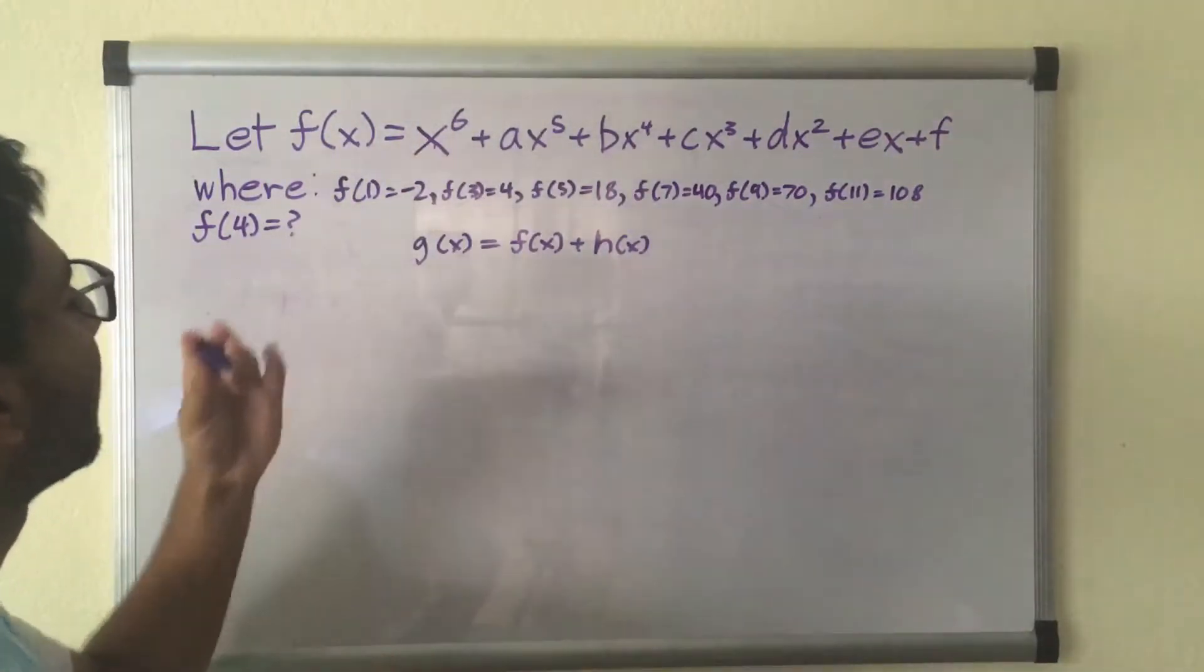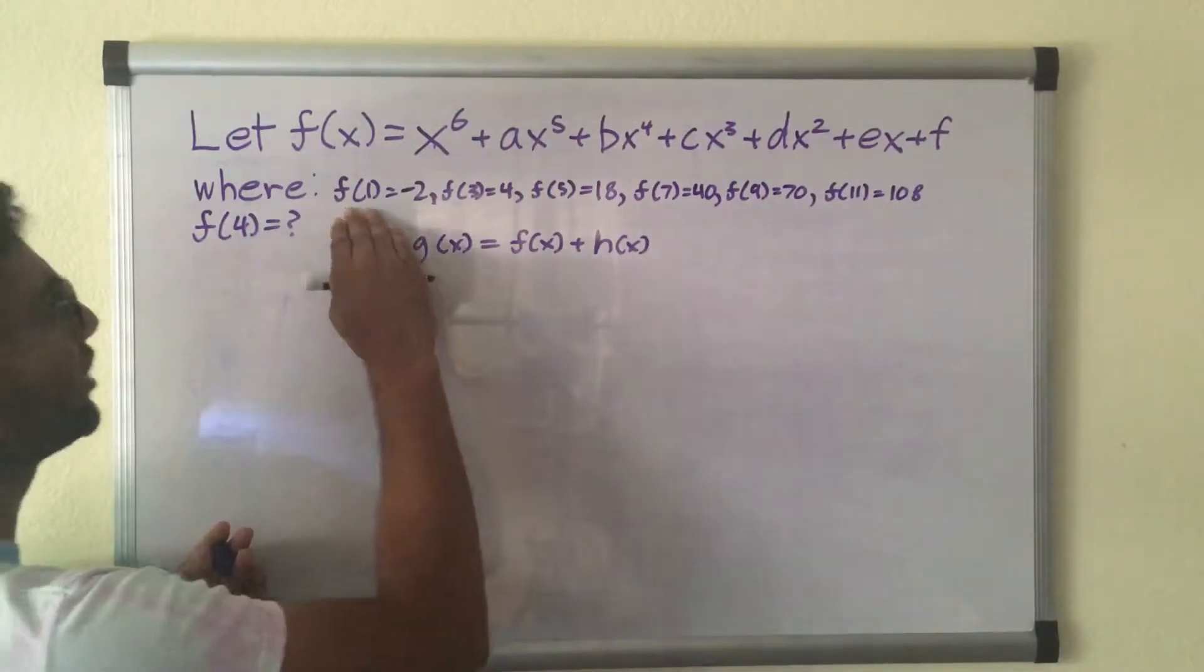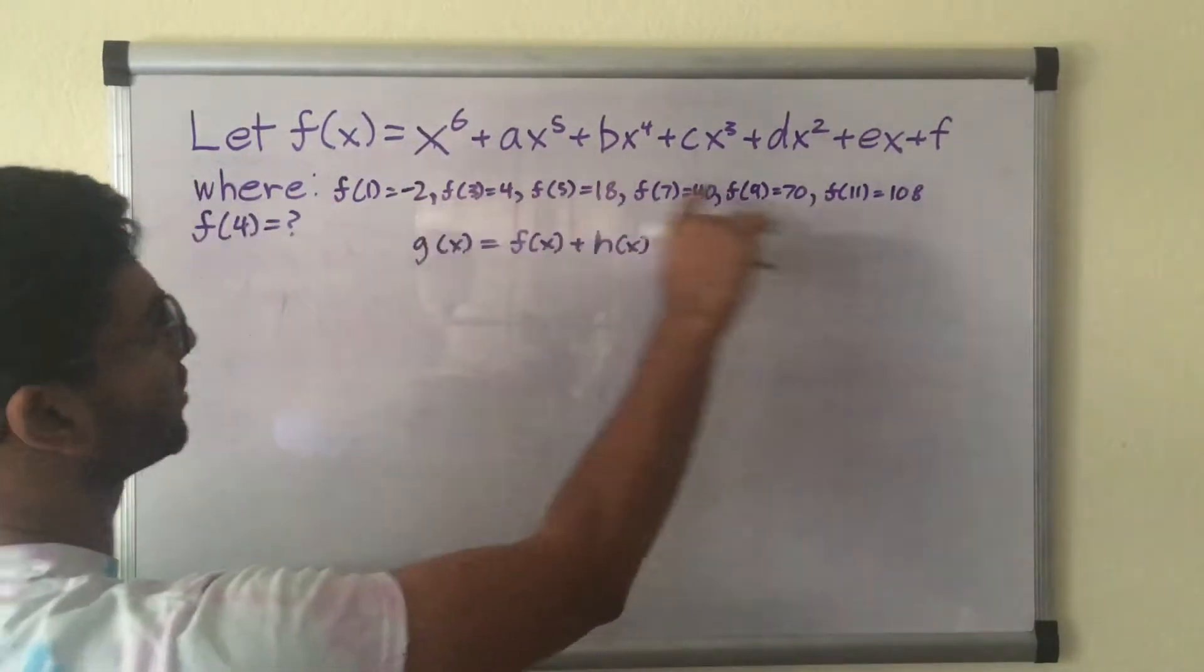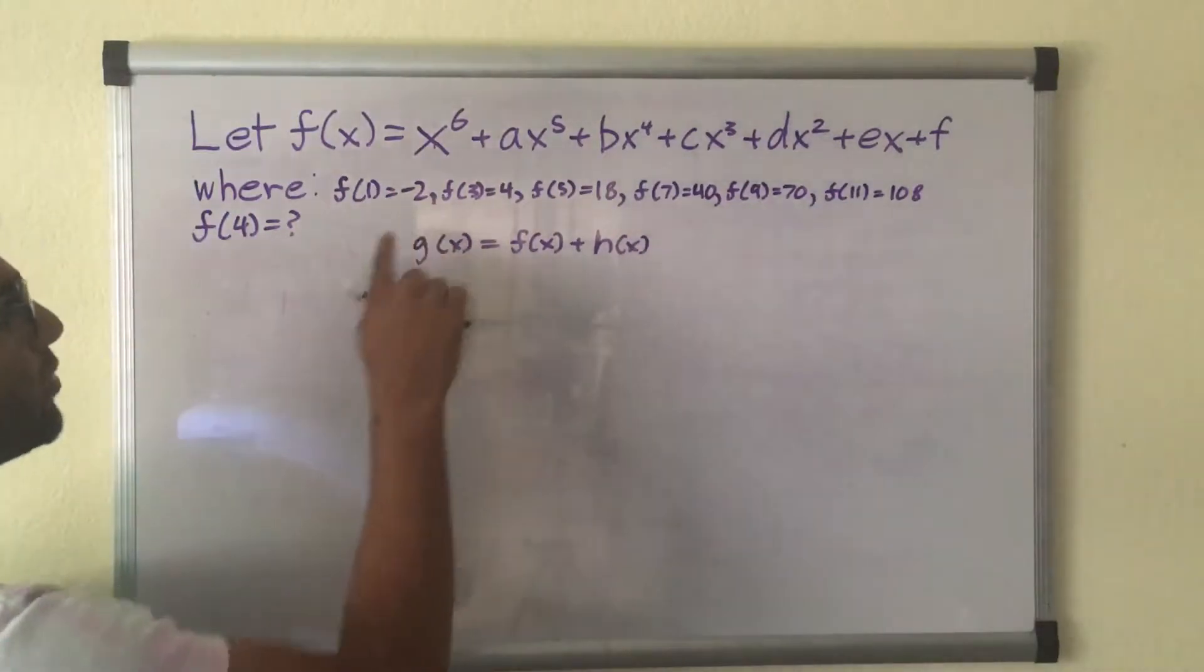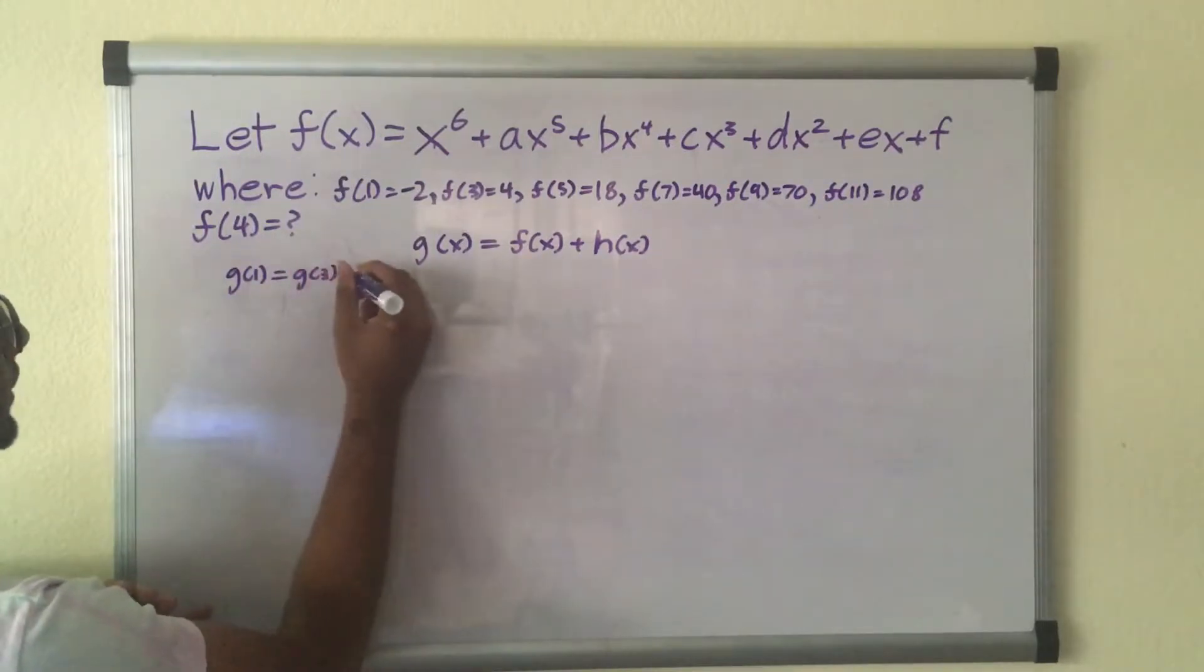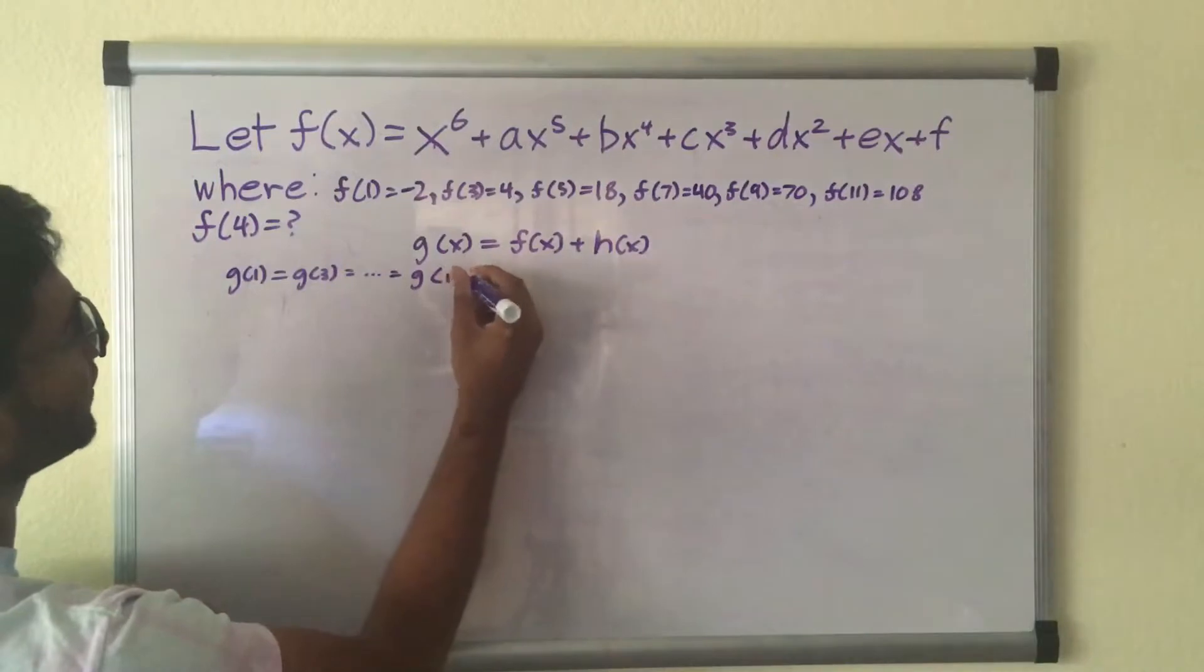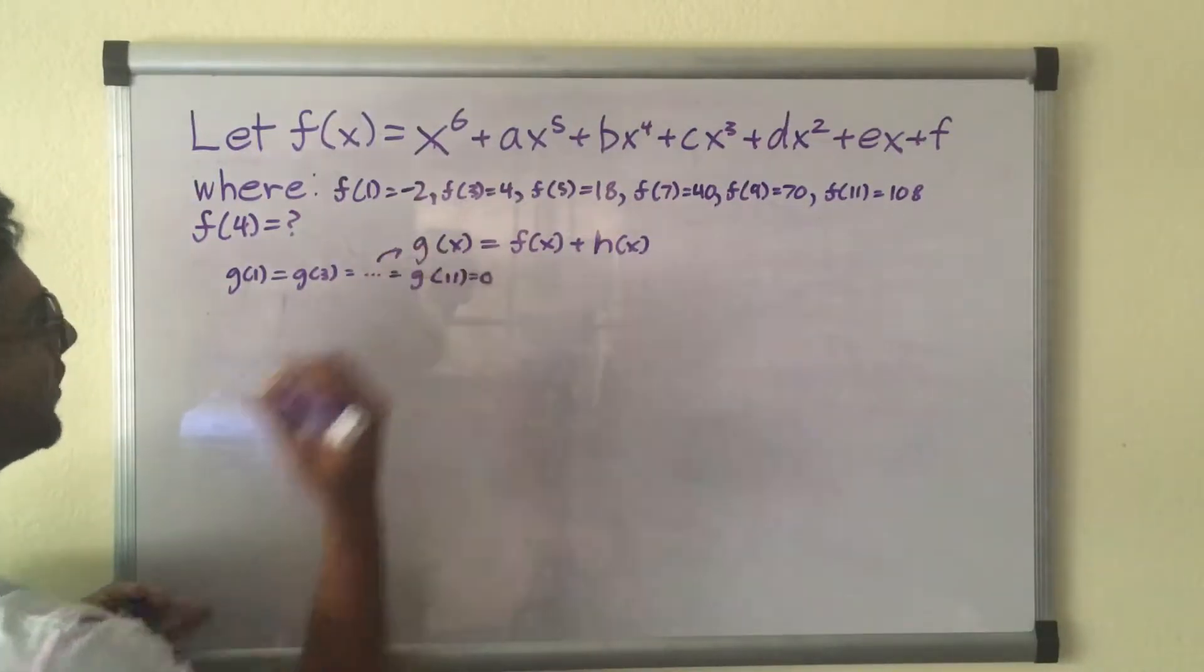But the reasoning behind this is what g of x actually is. We are going to make the initial values, the inputs of the initial values in f, those are going to be the roots for g of x. So in other words, we'll have g of 1 equals g of 3 equals all the way to g of 11. They will all be 0 for this g of x.